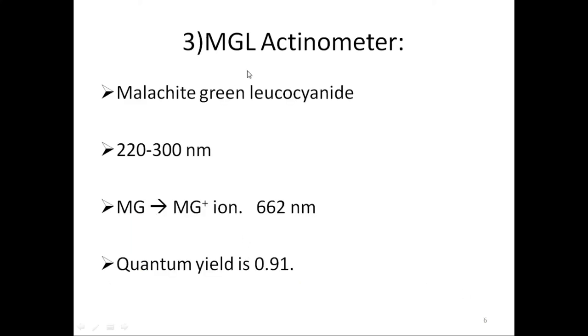The third actinometer is MGL actinometer, that is malachite green leucocyanide. It is used in a range of 220 to 300 nanometers. On irradiation of MGL, it converts to MG+ ion, that is malachite green cation, which has very strong absorption at 662 nanometers. The quantum yield for production of MG+ is 0.91.